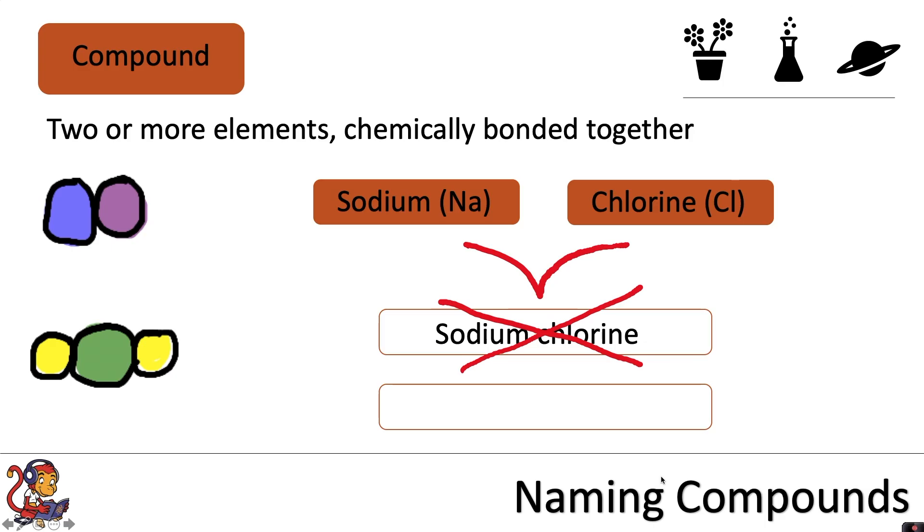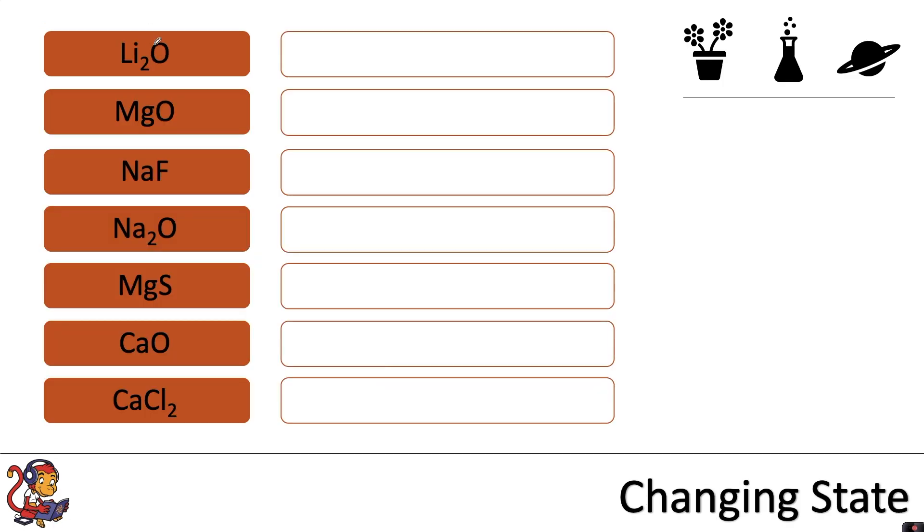So when sodium and chlorine bond, instead we would call it sodium chloride. And all the compounds that we'll look at today are those that end in 'ide'. So let's have a look at a few more examples.